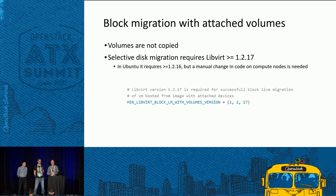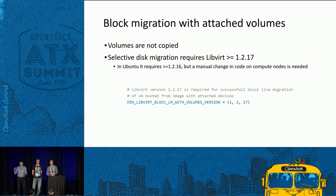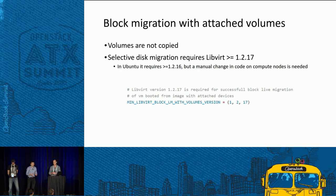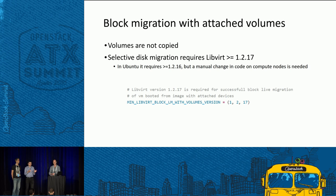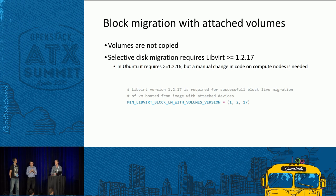Prior to Mitaka, there was a problem with block live migration when a VM had additional volumes attached — block live migration resulted in volumes being copied to themselves, which often corrupted the file system. We fixed this by excluding volumes from the list of devices being copied to destination. This requires a fairly new version of LibVirt: 1.2.17. On Ubuntu, version 0.16 works though officially we support 0.17.